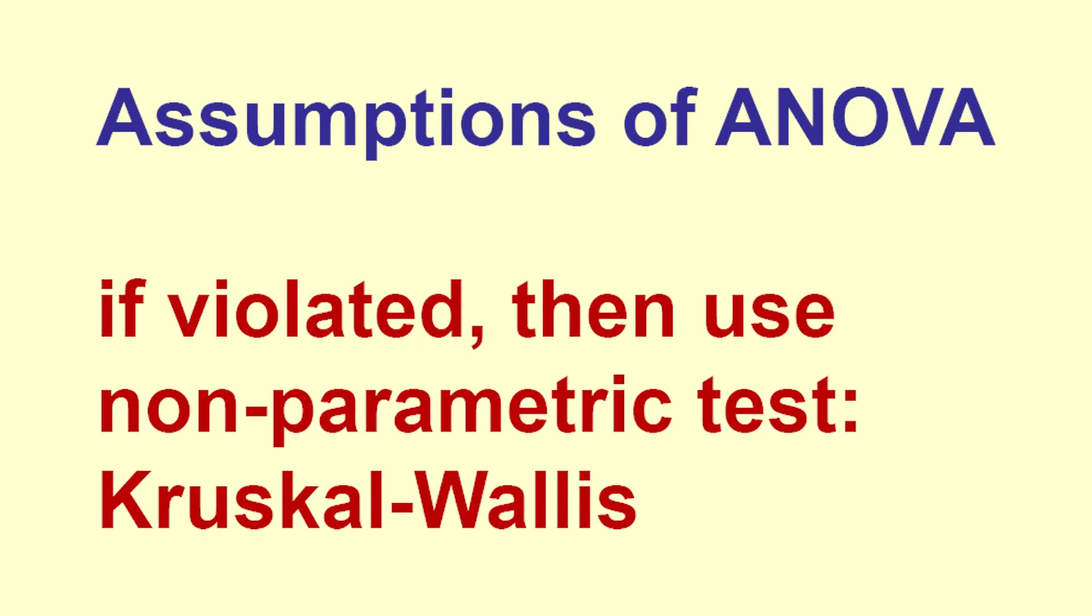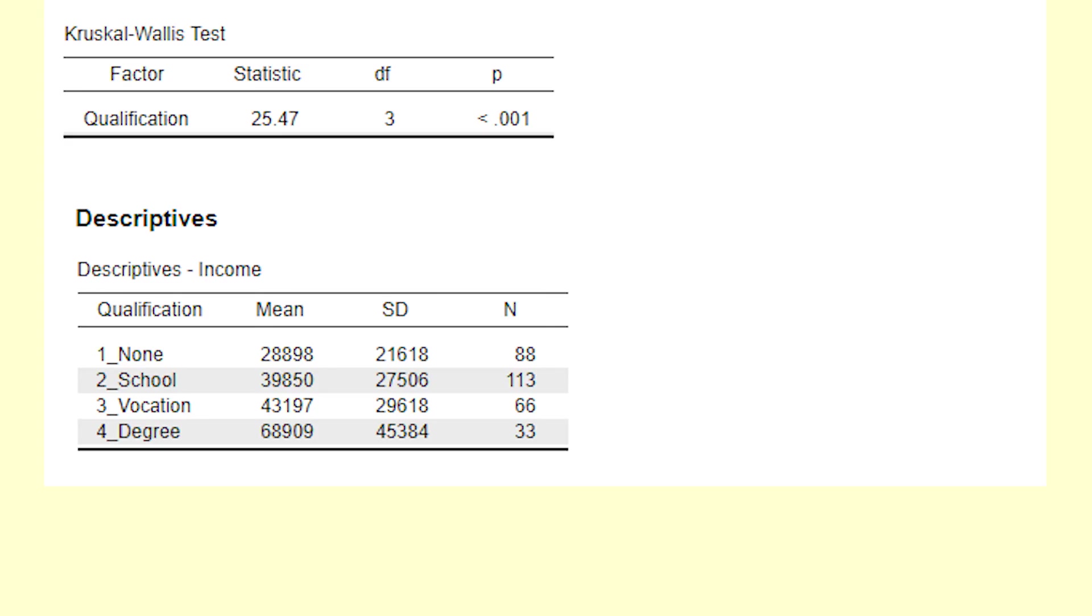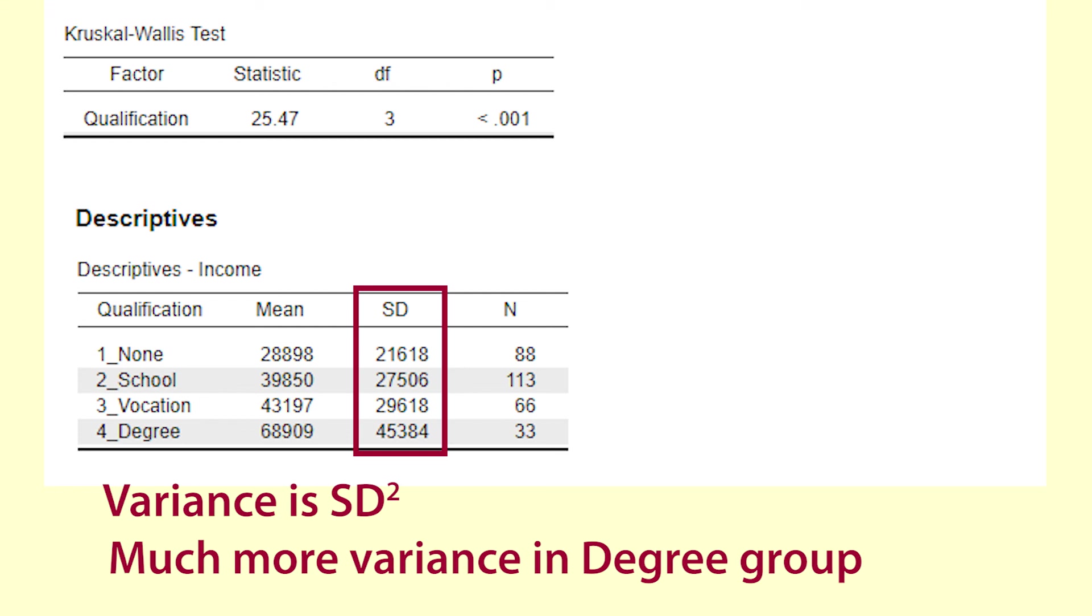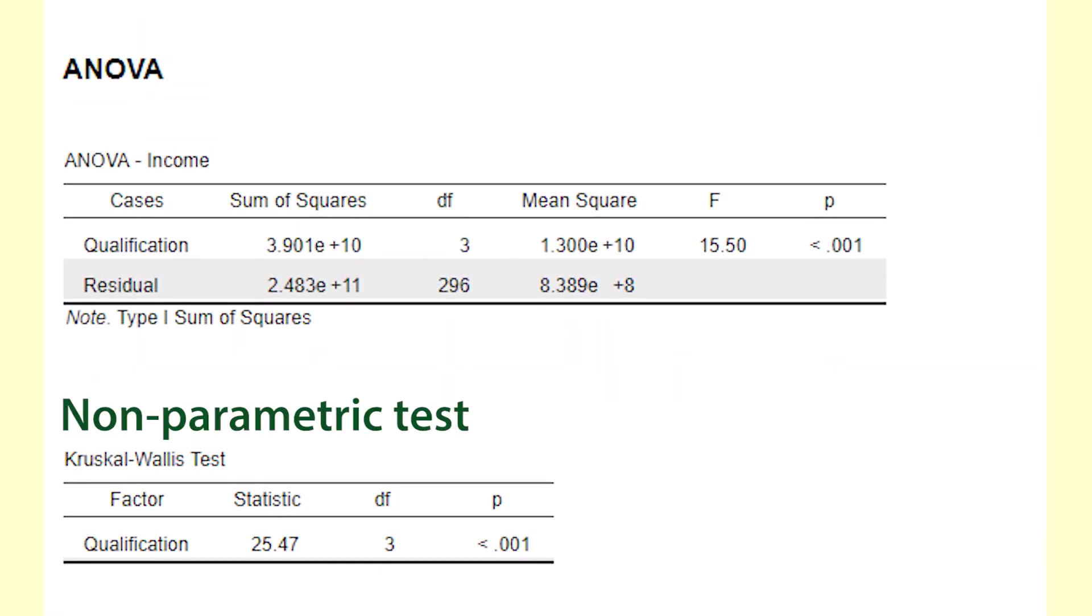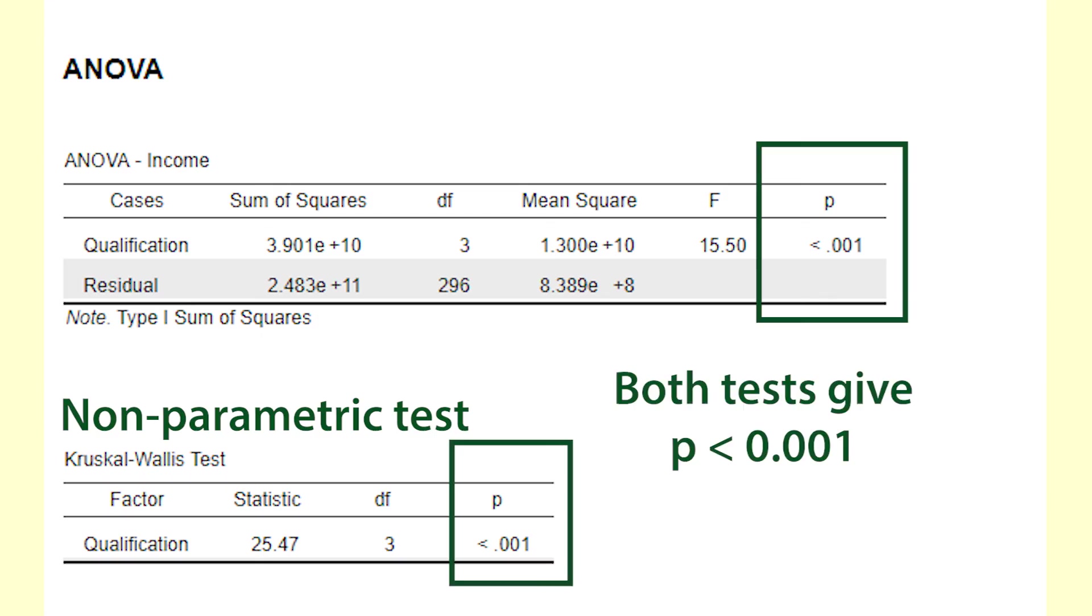This sample does show some violation of assumptions. The variances are quite different and the group sizes are also quite different so it would be prudent to use a Kruskal-Wallis. You can see from the output that the result is also statistically significant when using the non-parametric test Kruskal-Wallis.